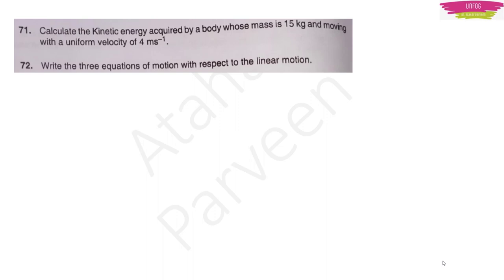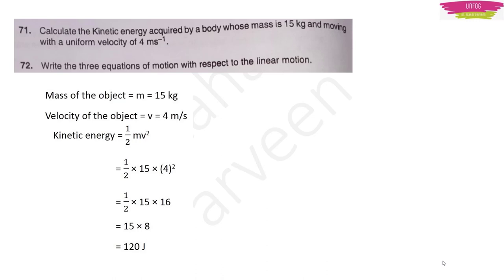Question 71 (Physics): Calculate the kinetic energy of a body of mass 15 kg moving at 4 m/s. Kinetic energy = ½mv² = ½ × 15 × 4² = ½ × 15 × 16 = 120 joules.